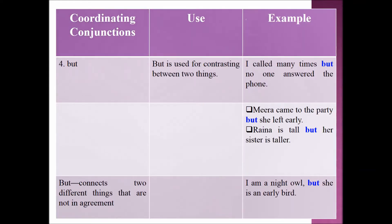Next, we are going to learn about BUT. BUT is used for contrasting between two things. Example sentences: 'I called many times, but no one answered the phone.' 'Meera came to the party, but she left early.' 'Raina is tall, but her sister is taller.' BUT connects two different things that are not in agreement. Example: 'I am a night owl, but she is an early bird.'